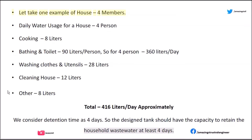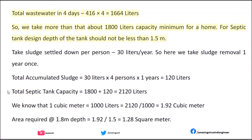Let's take one example of a house with 4 members. Daily water usage for 4 persons: cooking — 8 liters; bathing and toilet — 90 liters per person, so for 4 persons that is 360 liters per day; washing clothes and utensils — 28 liters; cleaning house — 12 liters; other — 8 liters. Total: 416 liters per day. We consider detention time as 4 days, so the design tank should have the capacity to retain the total wastewater for 4 days.